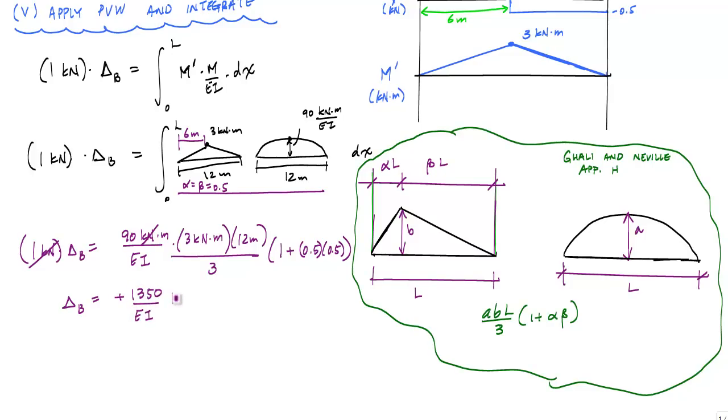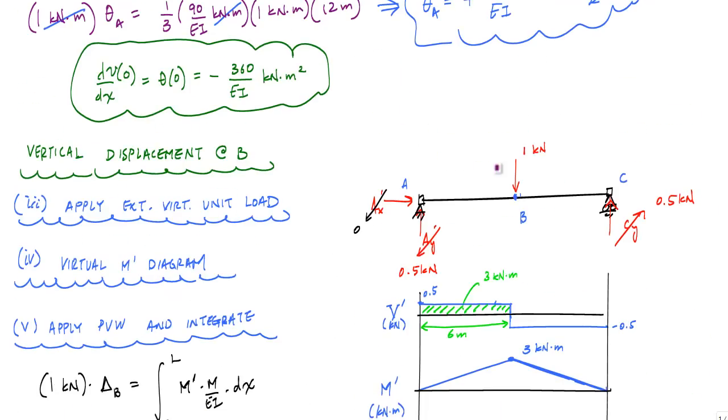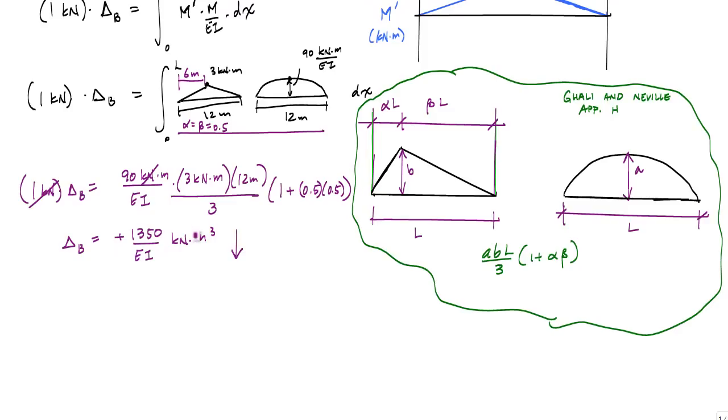And the positive just indicates that that direction I applied the unit virtual force is in the same direction as the displacement of point B downwards. But according to my VX coordinate system at the very beginning that we established here,